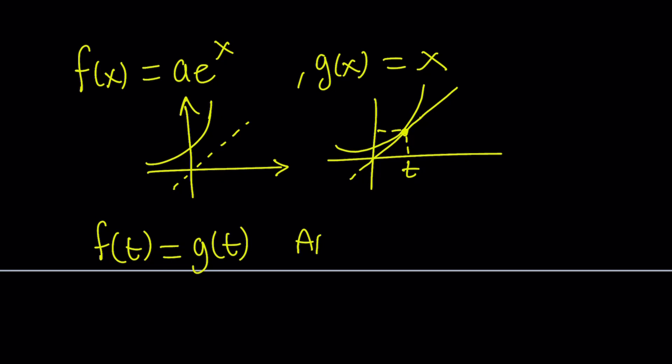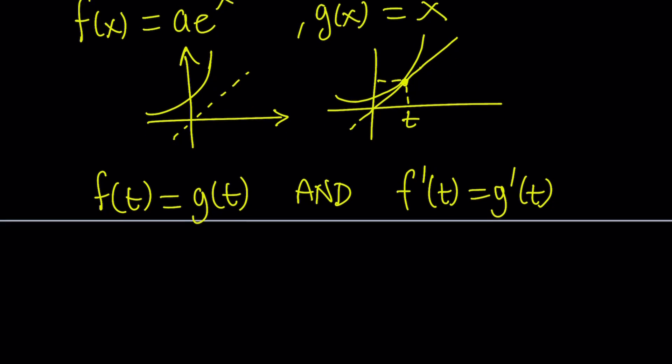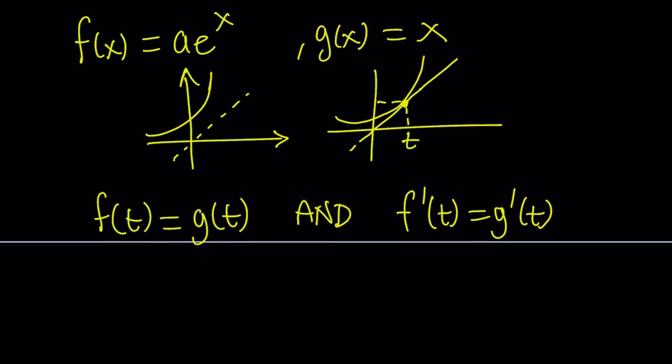So that means f prime at t is going to be the same as g prime at t. Remember, the first derivative at a point gives you the slope of the tangent drawn at that point. So let's go ahead and take a look at each one. And we're going to find the case of tangency. And now we're going to go to the other cases from there.